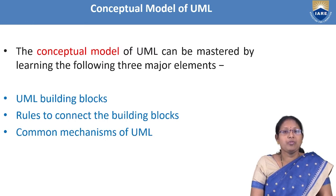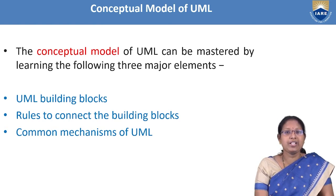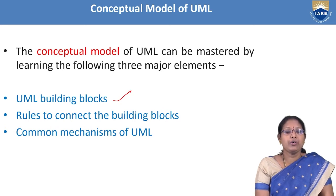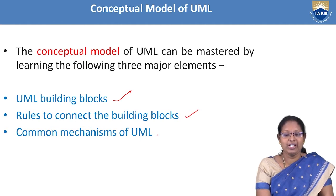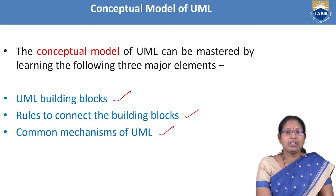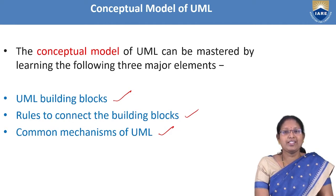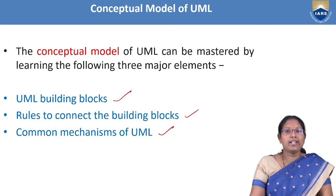The conceptual model of UML consists of three major elements: the basic building blocks, rules to connect the building blocks, and common mechanisms of UML. By using the UML building blocks, following the common rules, and applying the common mechanisms, we can build models very easily.